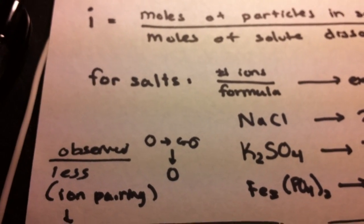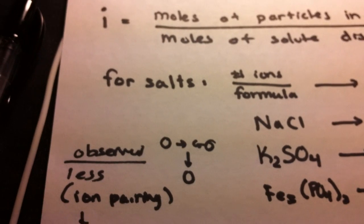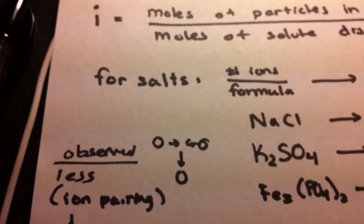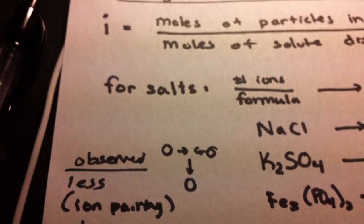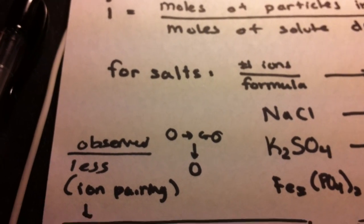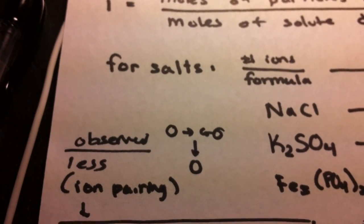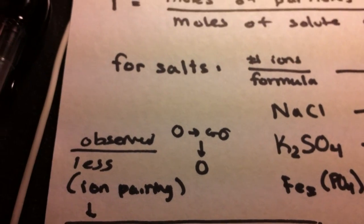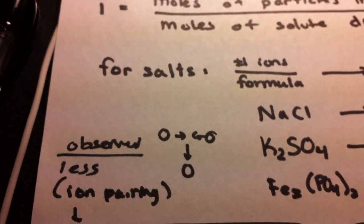Ion pairing is just basically two ions meeting each other to reform or form just one particle instead of two separate ones. Ion pairing is more common in concentrated solutions and less common in diluted solutions because of the distance between the ions.